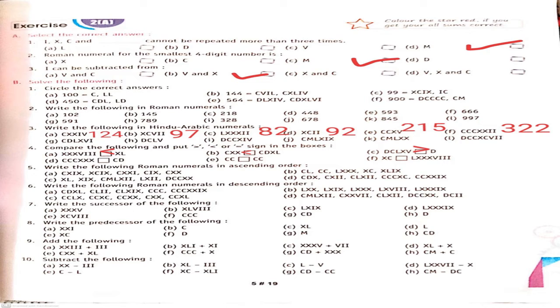Question 4: compare the following and put the sign — greater than, less than, or equal to. Part A: XXXVIII versus XL. XXXVIII means 38, XL means 40. Since 40 is greater, XXXVIII is less than XL. Part E: CC versus C — both sides equal 200 (100+100), so we put the equal sign.